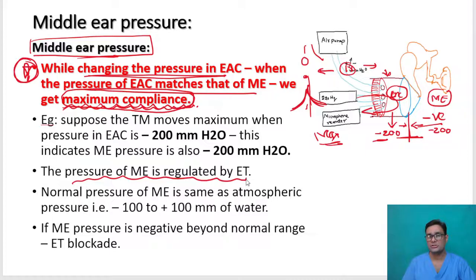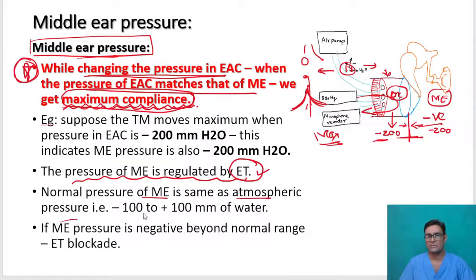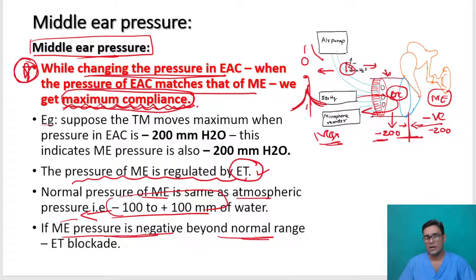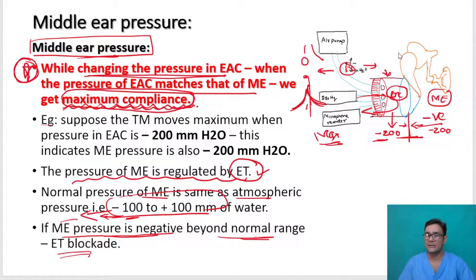The pressure of the middle ear is regulated by the Eustachian tube. So indirectly, we are measuring the function of the Eustachian tube. Normal pressure of the middle ear is the same as atmospheric pressure — minus 100 to plus 100 mm of water. When it goes below minus 100, that is where the pathology starts. If the middle ear pressure is negative beyond minus 100, we think there is Eustachian tube blockade, which can also lead to fluid build-up.